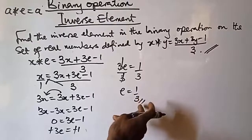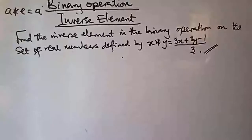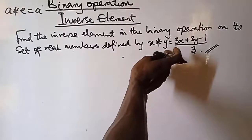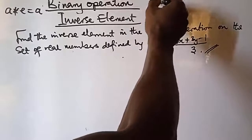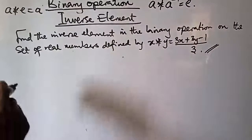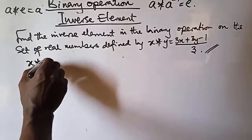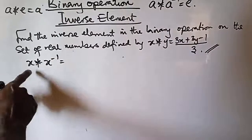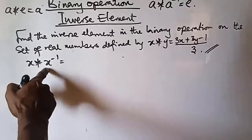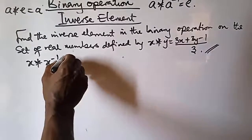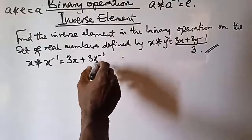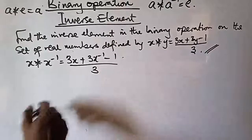Our identity element is one over three. Now let us find the inverse element. We will replace y in the expression with the inverse element. Remember the rule: a operated on the inverse of a gives you the identity element. So x operation the inverse of x — wherever we see y in the expression, replace it with the inverse of x — gives us 3x plus 3 times (x inverse) minus 1, all over 3.